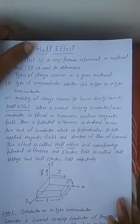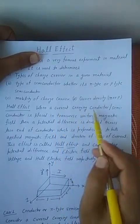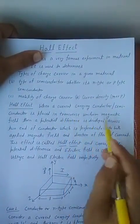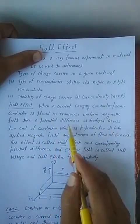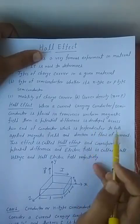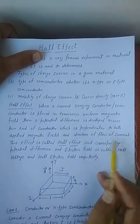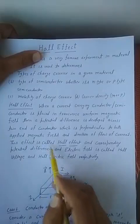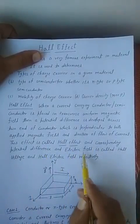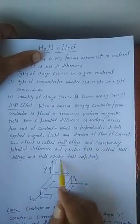Let us start with the statement of Hall Effect. When a current-carrying conductor or semiconductor is placed in a transverse uniform magnetic field, then a potential difference is developed across two ends of the conductor, which is perpendicular to both the applied magnetic field and the direction of flow of current. This effect is called Hall Effect. The corresponding potential difference and electric field which are developed are called Hall Voltage and Hall Electric Field respectively.